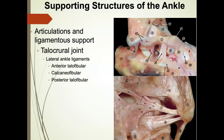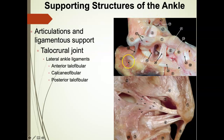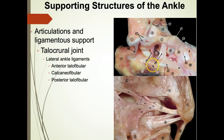Now we're going to talk about the ligamentous integrity of the ankle. On the lateral side of the ankle, we have three ligaments. The first is the anterior talofibular ligament — ATFL. The easiest way to remember it is which two bones the ligament attaches to: it's on the anterior talus and it attaches to the fibula, so it's the anterior talofibular ligament. You can see in this cadaveric dissection that the ATFL is actually bifurcated — it's really two ligaments.